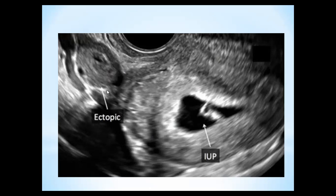It is very important to look at the ovary on both sides and look for any lesion beside the ovary. Here, there is a lesion which has a thick wall — not a picture of the ovary — and an anechoic area inside it. We should be suspicious of an ectopic or heterotopic pregnancy. There is an intrauterine pregnancy, and this is an ectopic component of a heterotopic pregnancy.